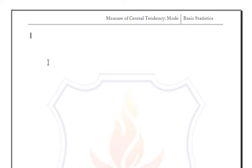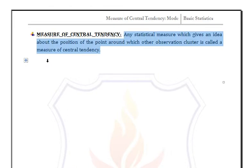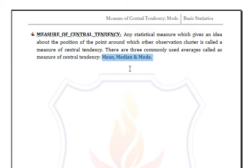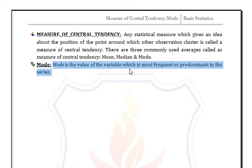In this video we discuss measures of central tendency. Any statistical measure which gives an idea about the position of the point around which other observations cluster is called a measure of central tendency. For any data, the most representative value is known as the central tendency. There are three commonly used averages: mean, median, and mode.